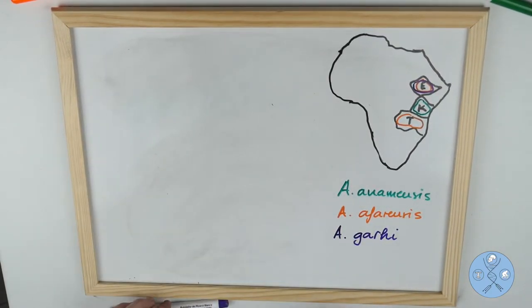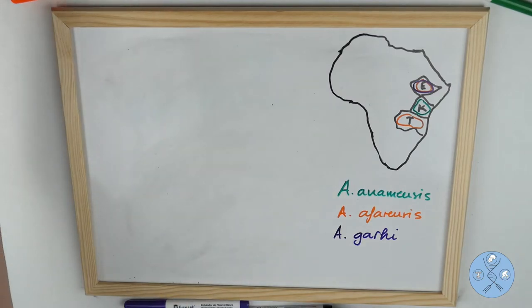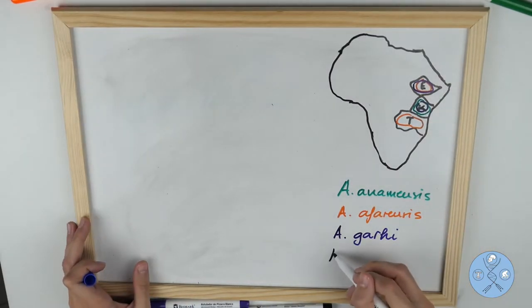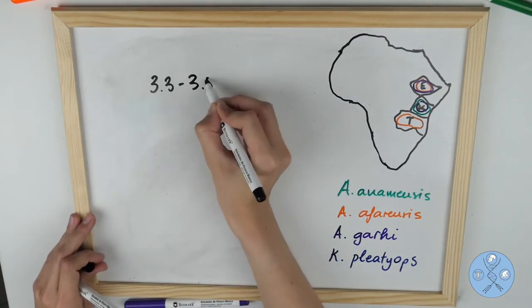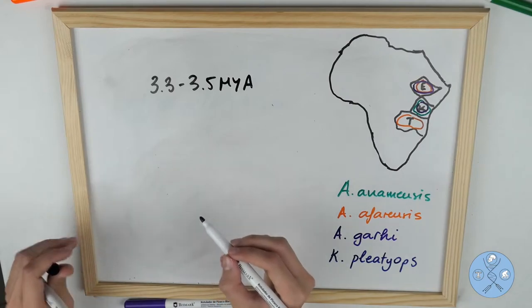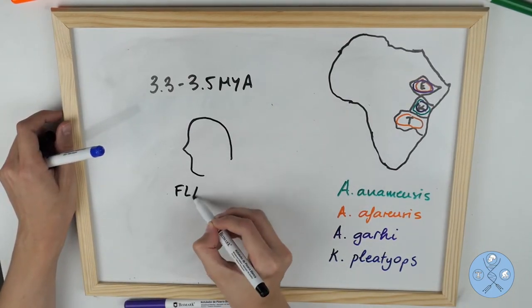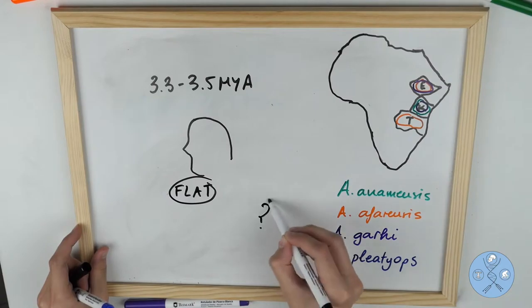The latest archaic hominin to be discovered in Kenya was a new genus and species, Kenyanthropus platyops, dated between 3.3 and 3.5 million years ago. It had cranium features different from Australopithecus afarensis, as it had flat faces. Apart from this, little is known about this species.